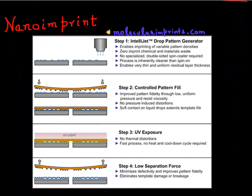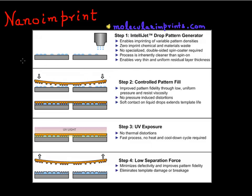Nano imprint lithography works as follows: you take your wafer, spray it with resist, and then come from the top using a stencil or template which already has your features patterned into it. You press this template onto the resist, which is in liquid phase, imprinting whatever features you want. Then you do a UV cure to bake that pattern into the resist, remove the template, and the pattern is essentially embossed into your resist.